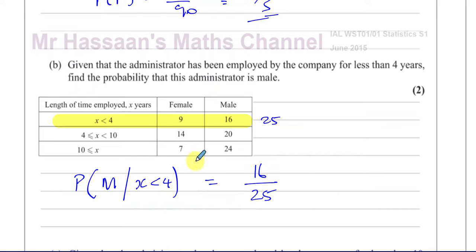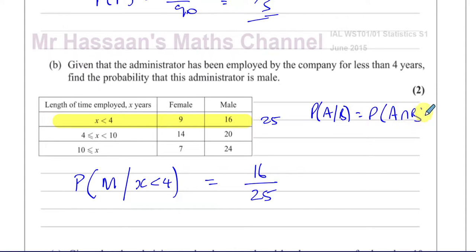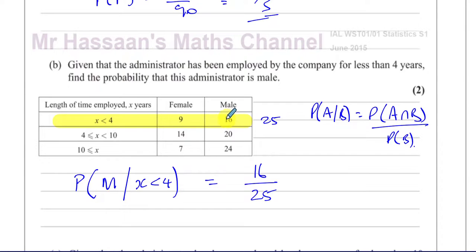That's a nice easy way of doing it. If you think about what we learned in probability, the probability of A given B is the probability of A intersection B over the probability of B — and that's what we've just done. The intersection between male and less than 4 years is 16, and the probability of less than 4 years gives us 25. So it's 16 over 25.